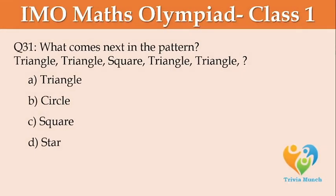What comes next in the pattern? Triangle, triangle, square, triangle, triangle, ___. A: triangle, B: circle, C: square, D: star.